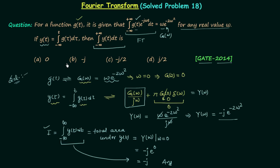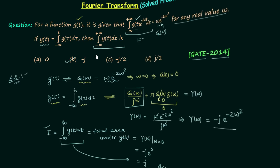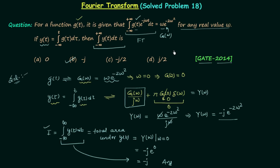So the answer is -j and option B is the correct option. This is all for this lecture.